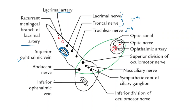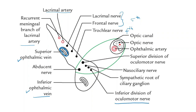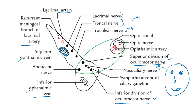The inferomedial part allows the passage of the inferior ophthalmic vein. The intermediate compartment of the superior orbital fissure allows the passage of the two divisions of the oculomotor nerve — the superior division and the inferior division — along with the nasociliary nerve and the abducent nerve.